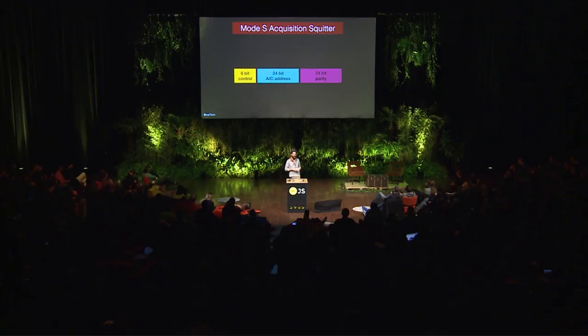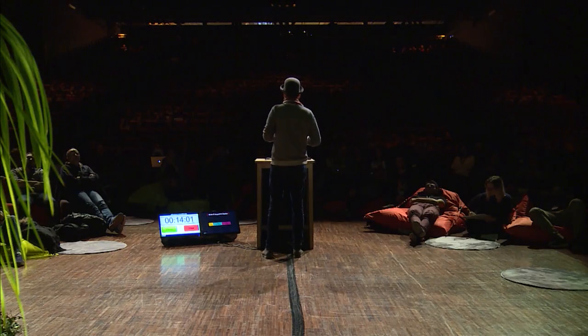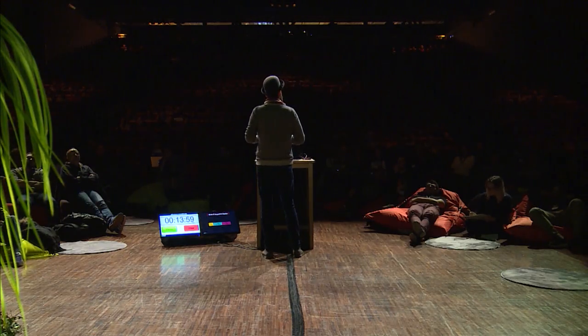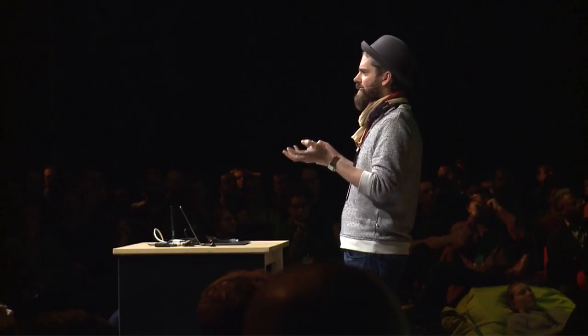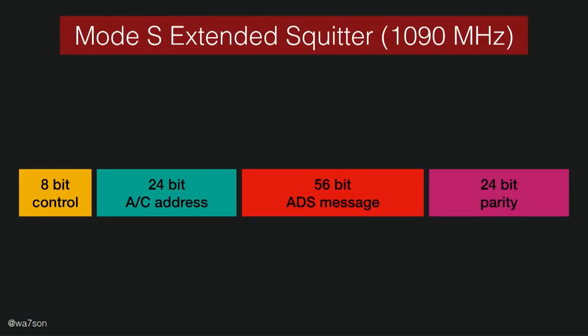The protocol is called Mode S. I always geek out about protocols — I really love figuring out how they work. It's a binary protocol. First there's an 8-bit control field, then there is this unique address for the plane that is built in by the factory, and then there are some parity bits — kind of like a checksum — to figure out if you decoded the message correctly. That was the original one, and then they extended it by simply adding the ADS-B message inside it.